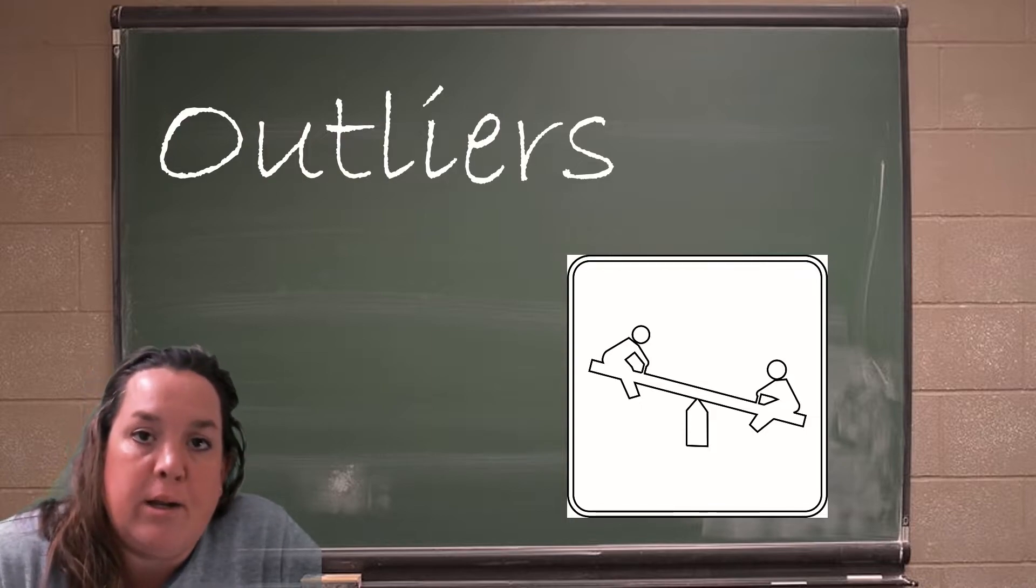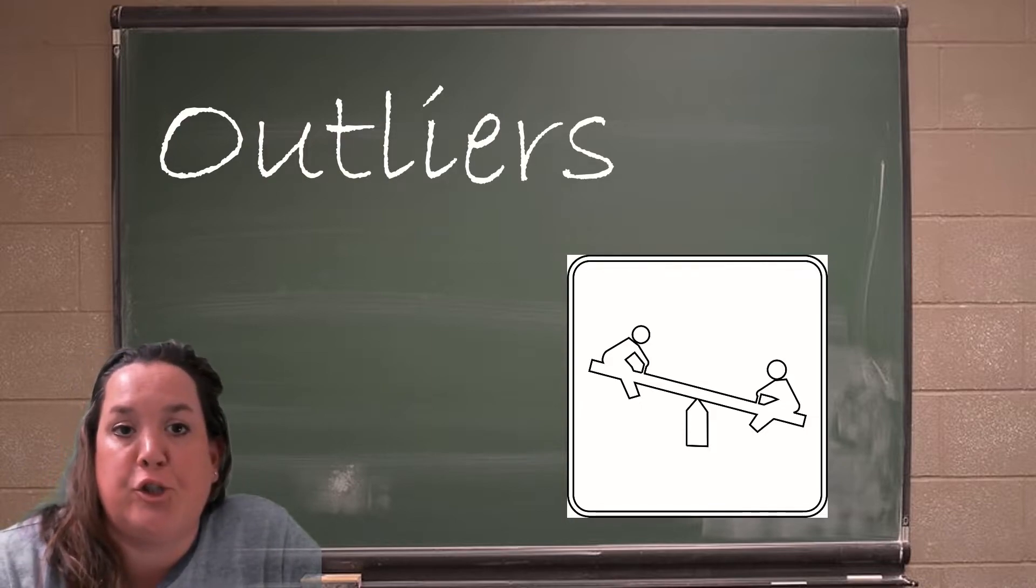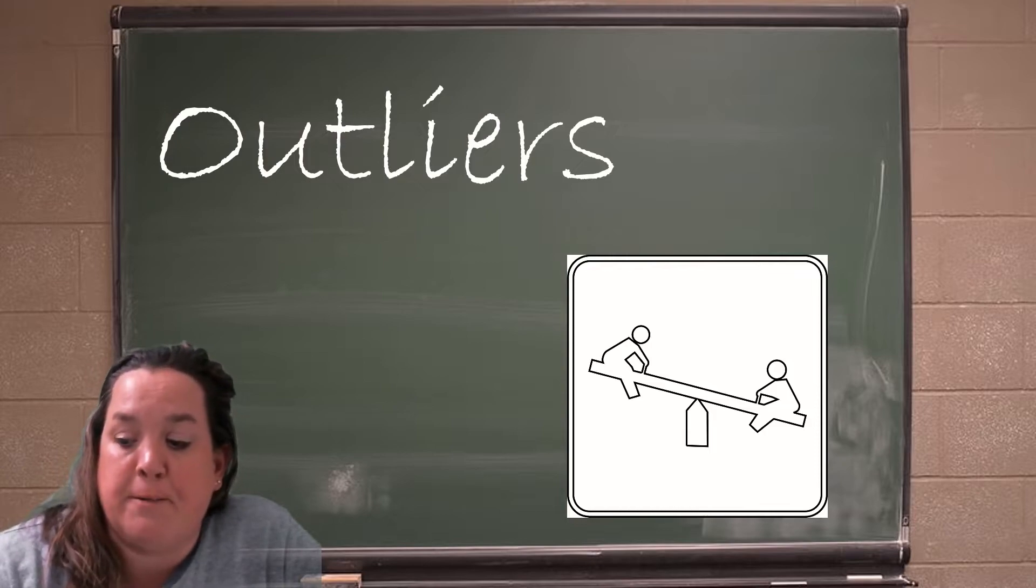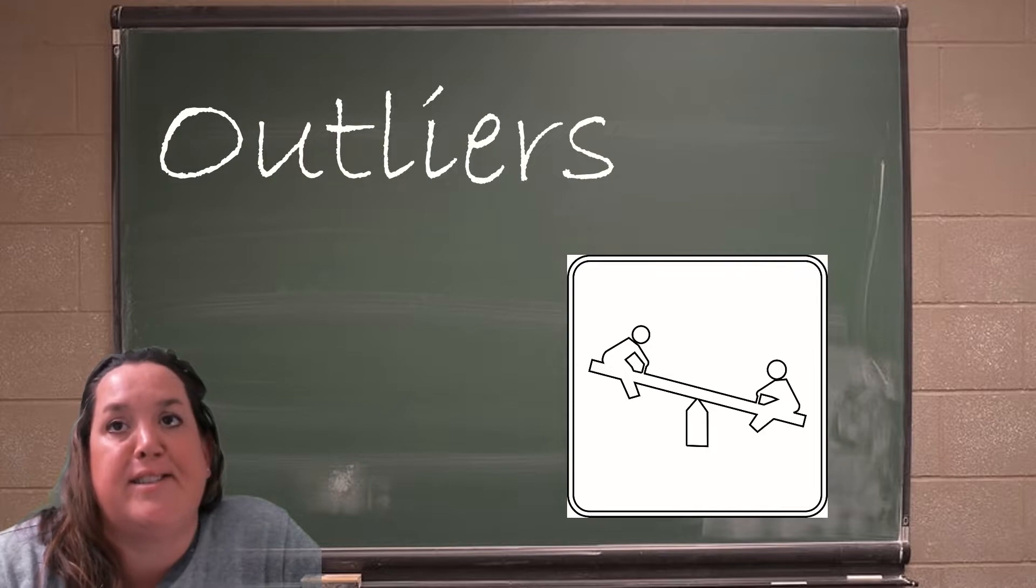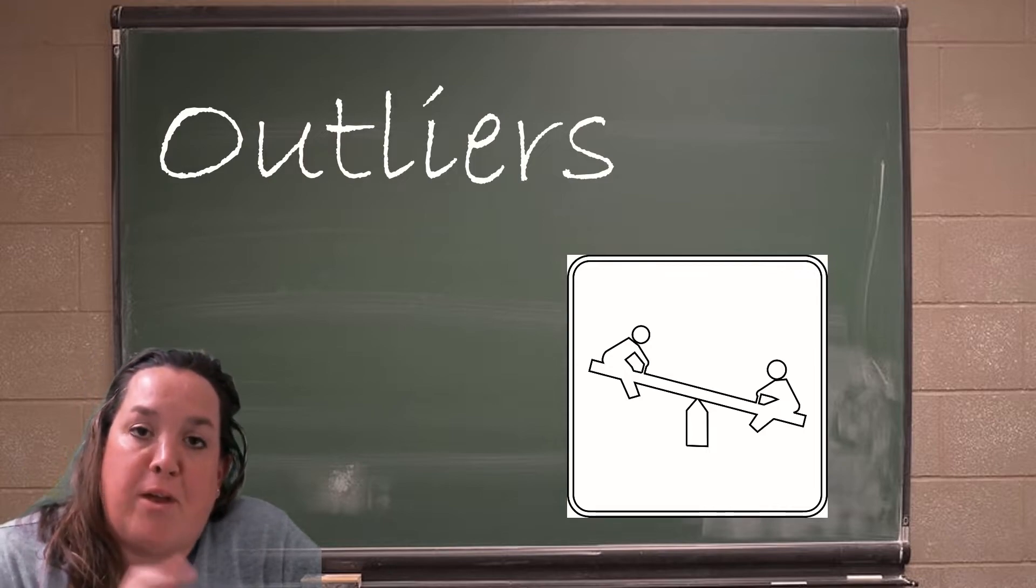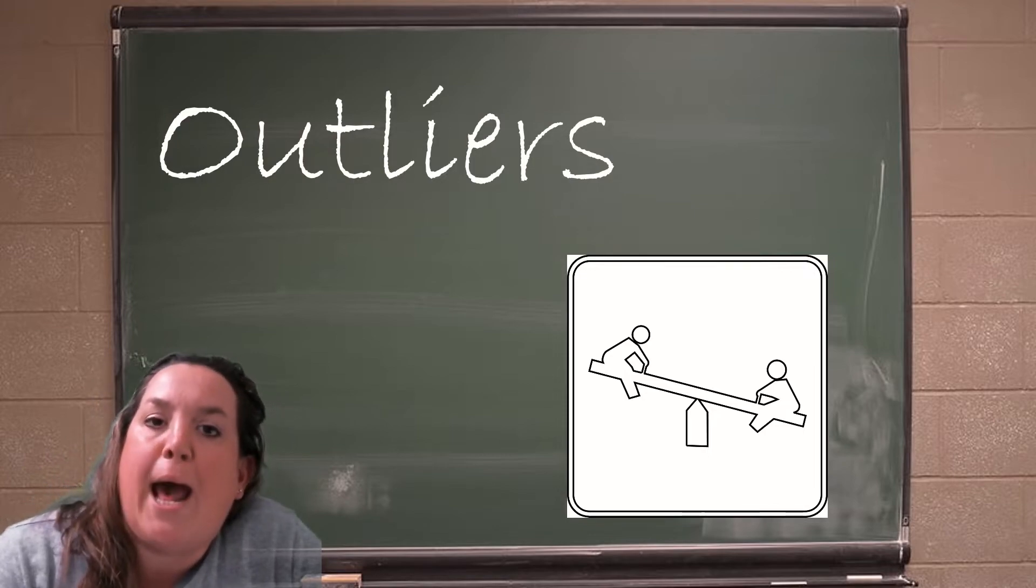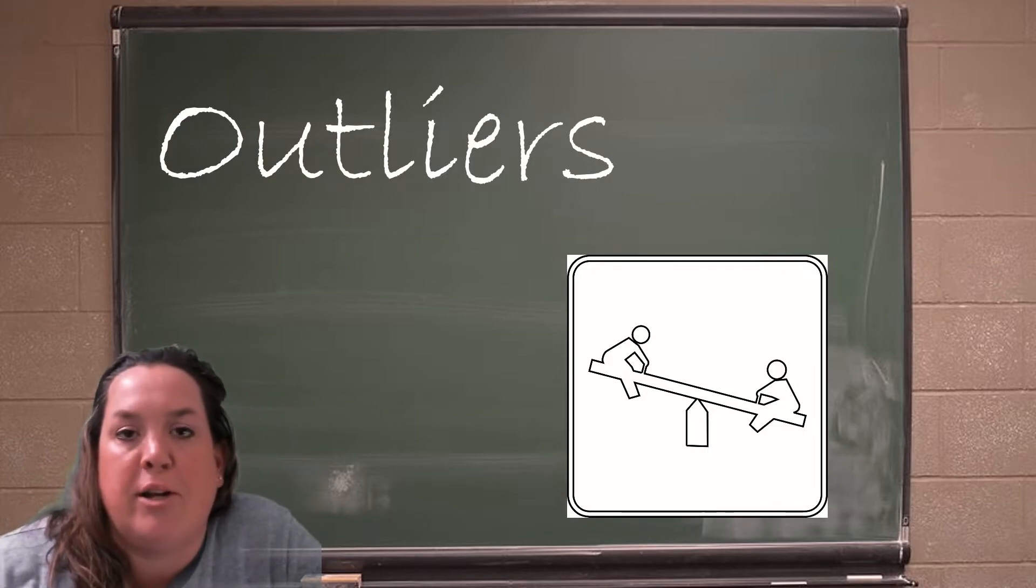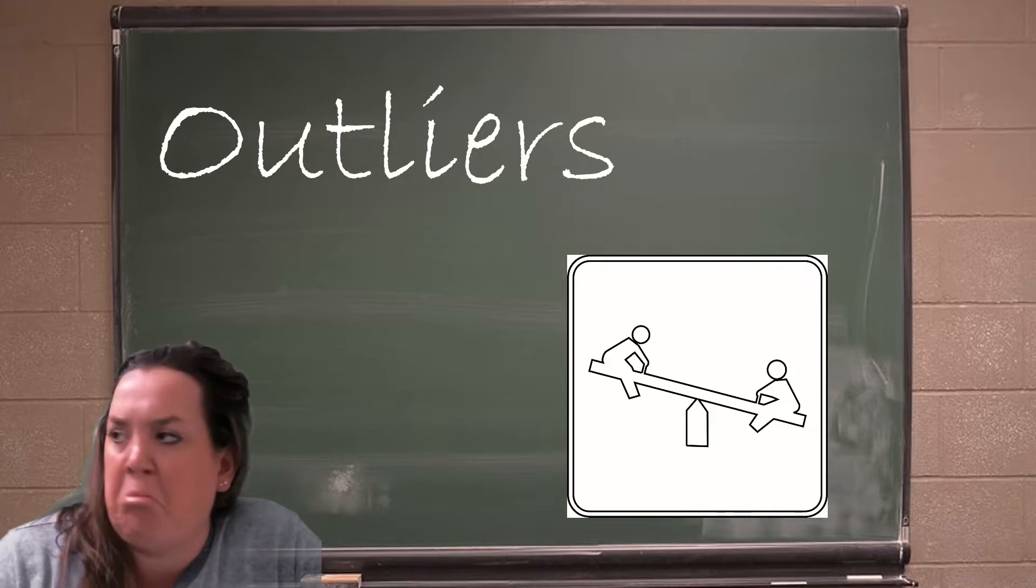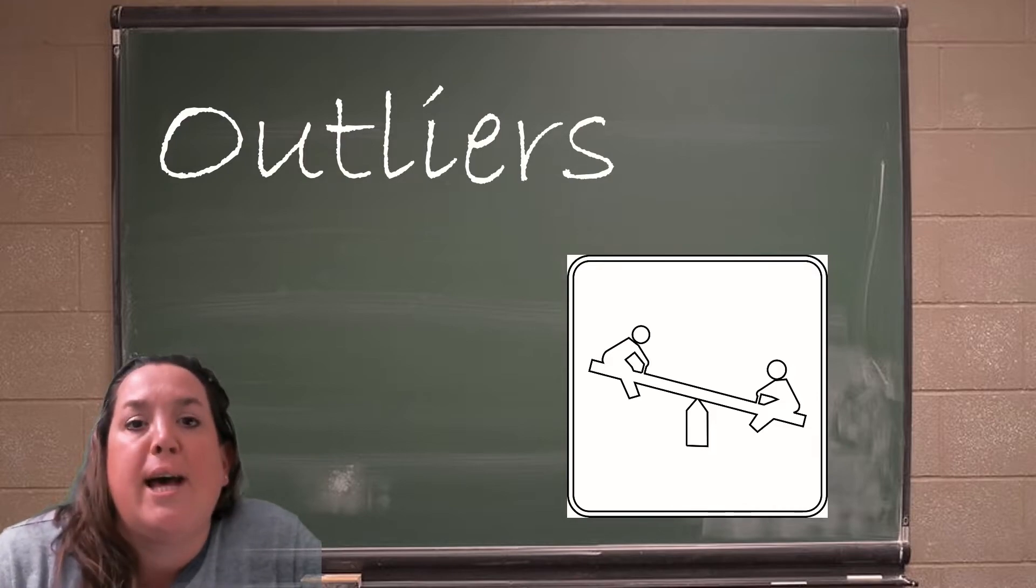That means that one individual or one observation is heavily impacting. Now, I always use the analogy of a teeter-totter because I remind people that that balancing point is actually the median. So does the median move if you were to add a large observation to either end of the distribution or the teeter-totter? No, it's not going to move. It's what we call robust against outliers.